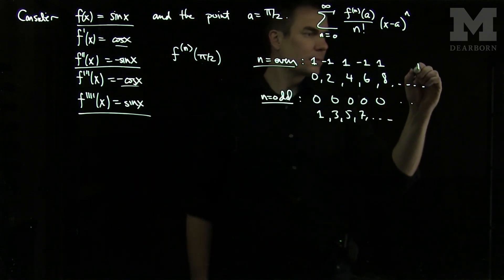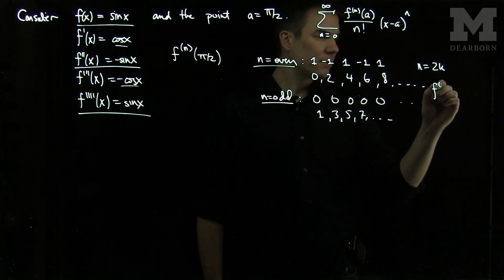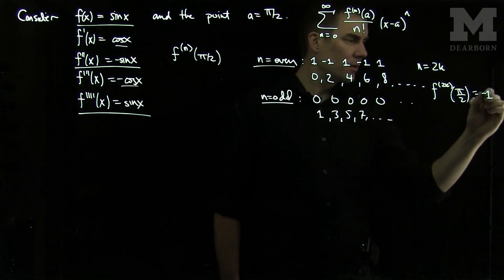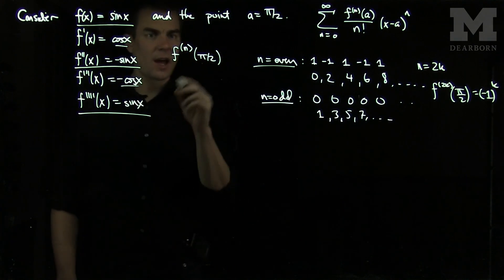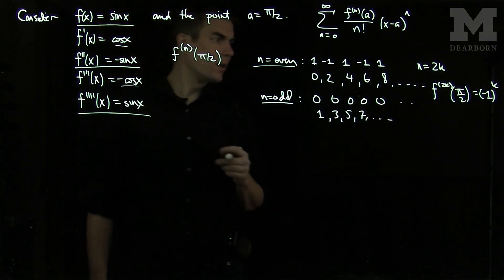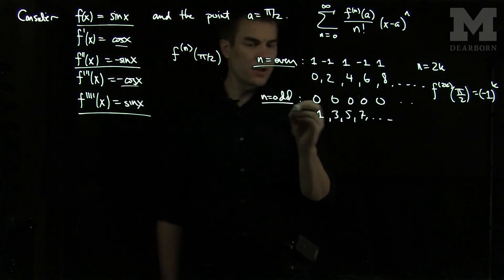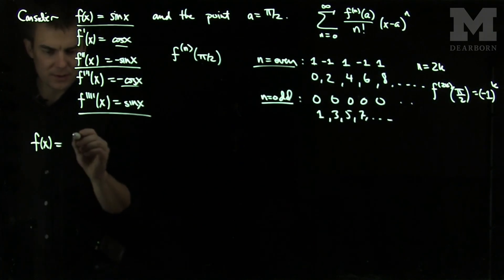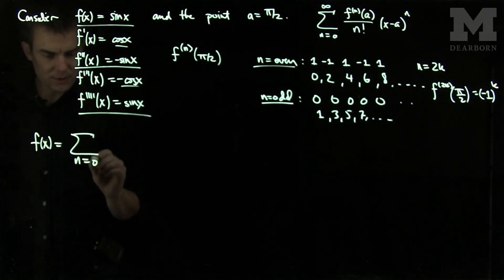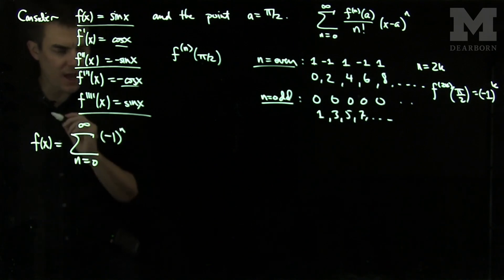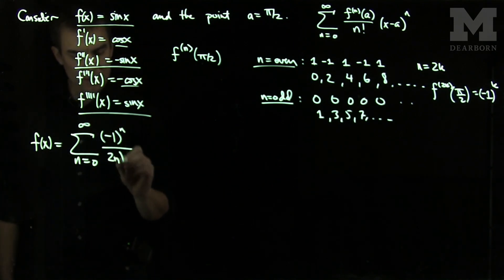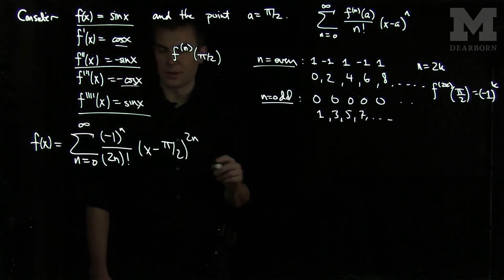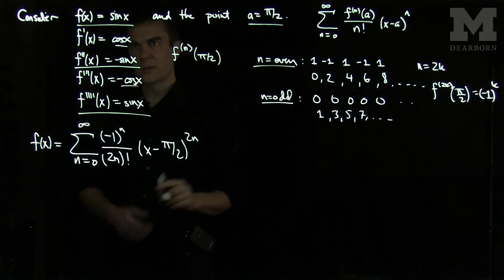So if n equals 2k, then f^(2k)(pi/2) equals negative 1 to the power k. Since all the odd terms are zero, we can write our series as f(x) equals the sum from n=0 to infinity of negative 1 to the n over (2n) factorial times x minus pi over 2 to the 2n. This is the Taylor series expansion for sine of x at the point pi over 2.